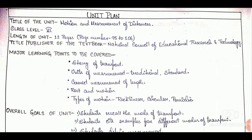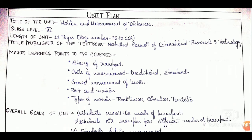So this is our sample unit plan, which will give you a rough idea of how you can prepare one. At the very top, we have written the title of the unit, then the class level, which is 6, then the length of the unit. We have simply mentioned the title or publisher of the textbook as NCRT, and we have written the main points or major concepts that are there in the chapter.